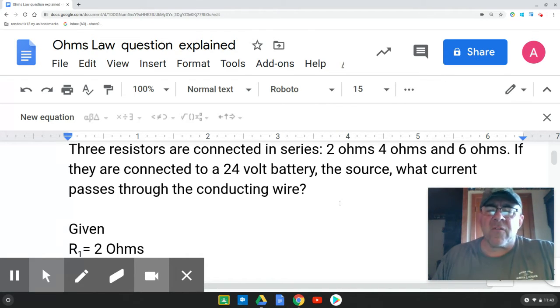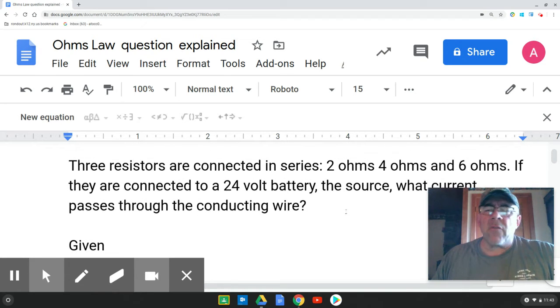Now, the question I asked you, it was two parts, very simple. Let me go over and explain the first one. It said three resistors are connected in series, two ohms, four ohms, and six ohms. If they're connected to a 24-volt battery, which is the source, what is the current passing through the conducting wire?